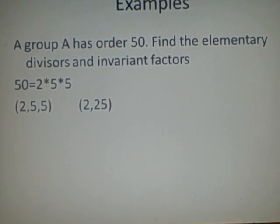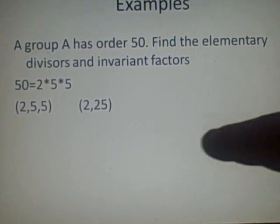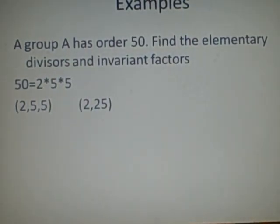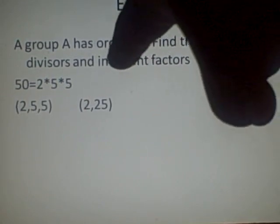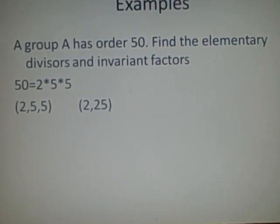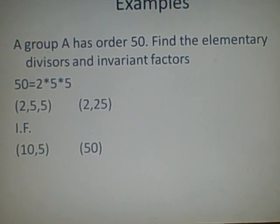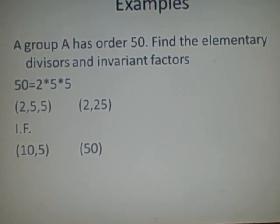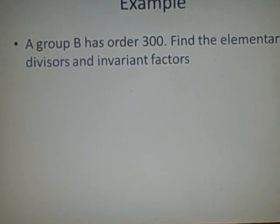Now for the invariant factors, we have to combine any co-prime things. So here we've got 2 and 5, which would give us 10 and 5. And here we've got 2 and 25, which would give us 50. So these are our invariant factors. This is very quick and easy, as I said.